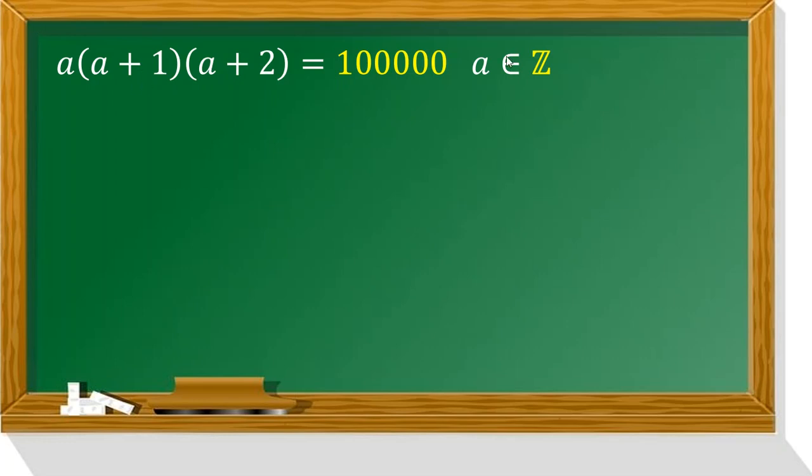Okay, in this problem, it says a is an integer, a times a plus 1 times a plus 2 is 100,000, and we want to find what is a. So first, we rewrite this again: a times a plus 1 times a plus 2 equals 100,000. 100,000 is 2 to the 5 times 5 to the 5.